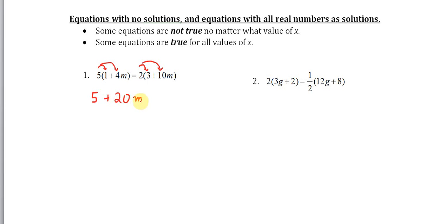Five times one is five, five times 4m is 20m. On the right side, two times three is six and two times 10m is 20m. Then I'm going to subtract five from both sides.